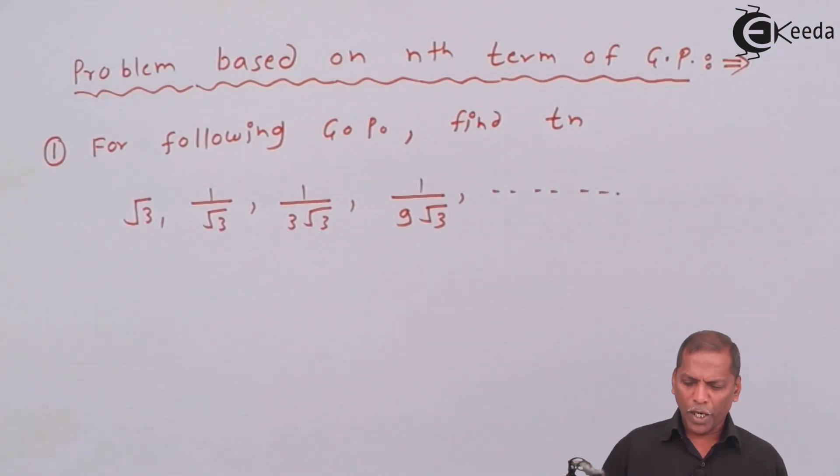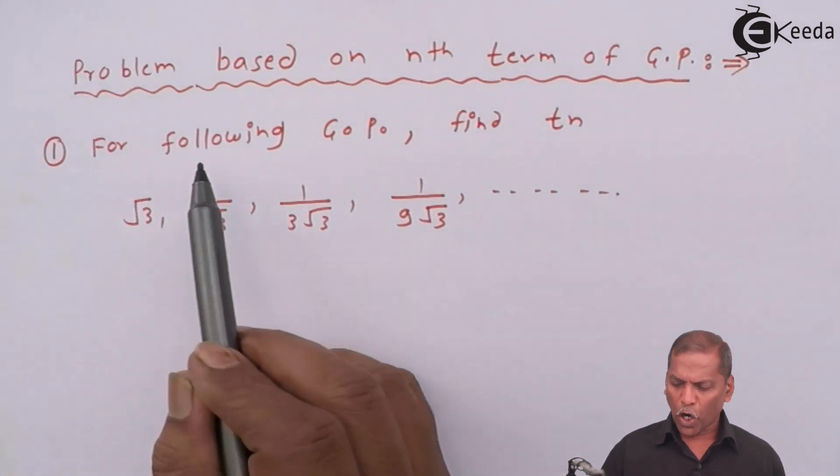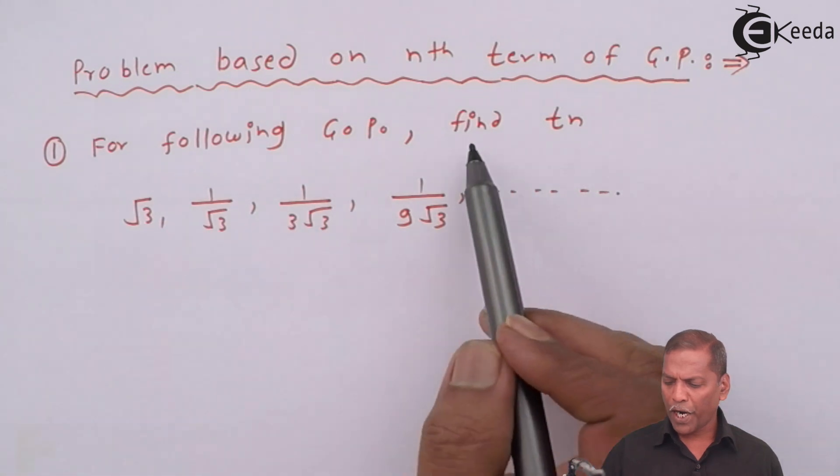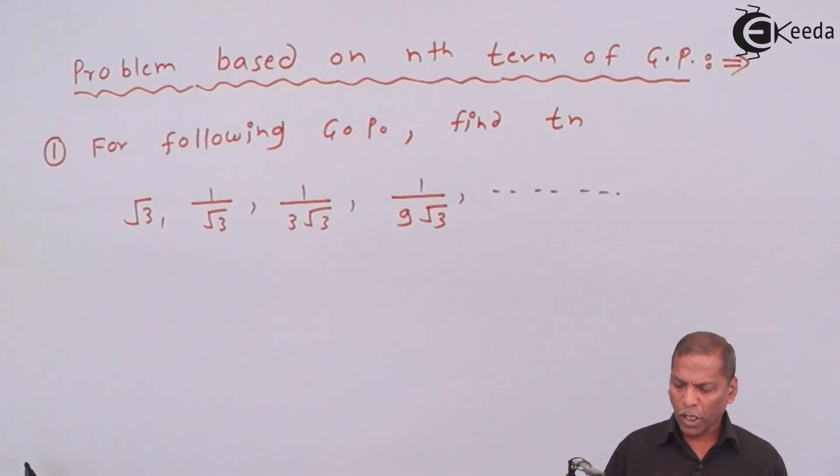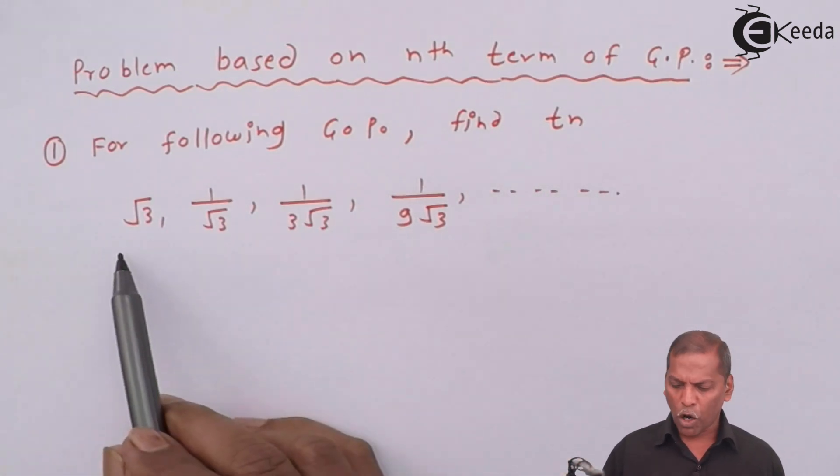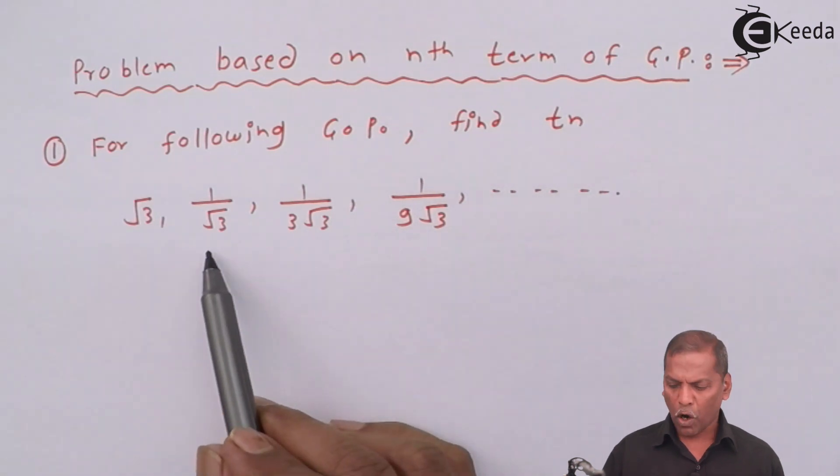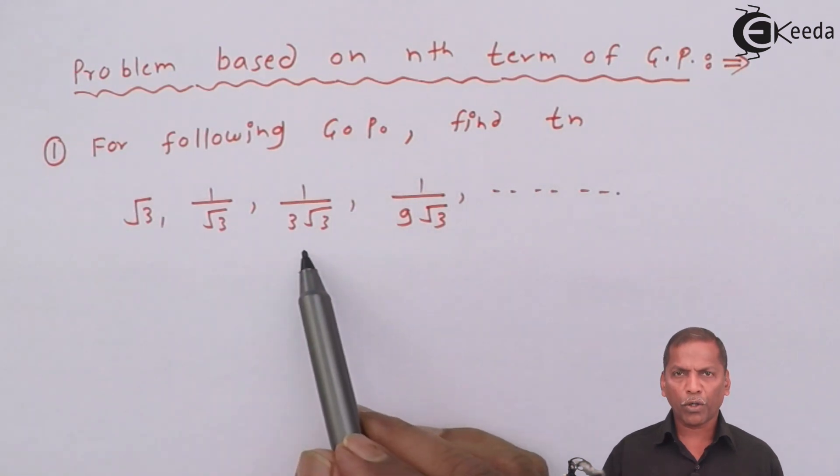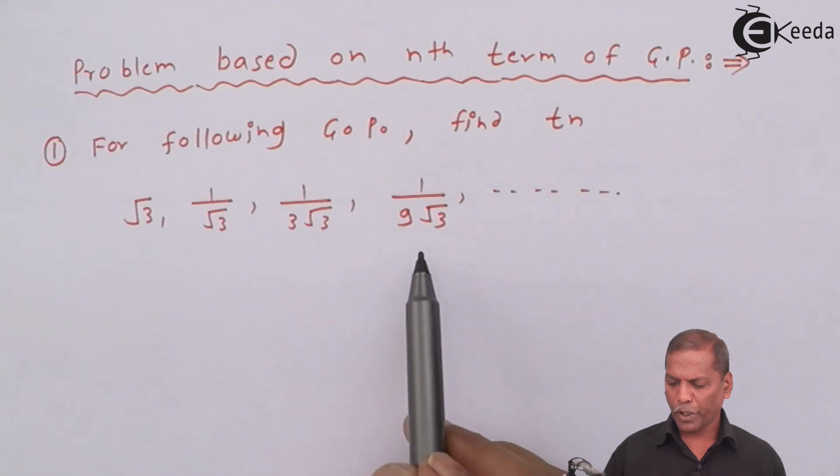Problem number one: for the following GP, we have to find nth term. The numbers are root 3, 1 by root 3, 1 upon 3 root 3, 1 upon 9 root 3.